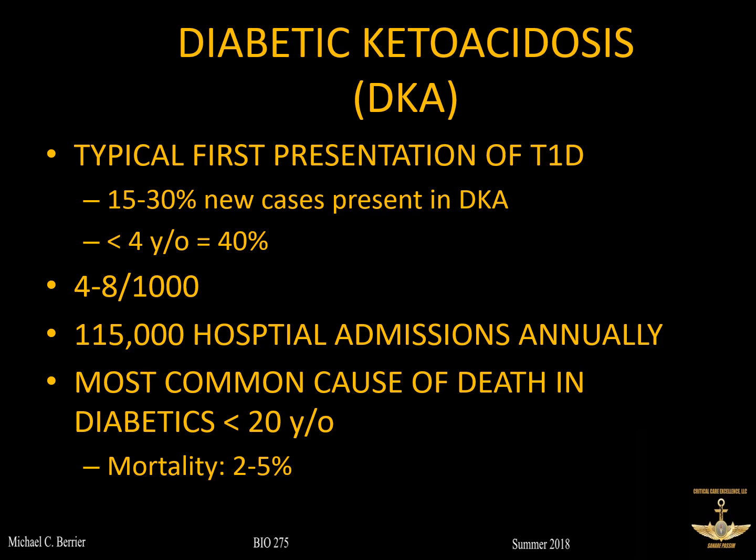The typical first presentation of type 1 diabetes is DKA — diabetic ketoacidosis — an incredibly dangerous disease. Up to 30% of new cases in the five-to-ten-year-old age range will first present in DKA. About four to eight per thousand diabetics per year develop DKA, with over 100,000 hospital admissions annually. It's the most common cause of death in diabetics under 20, with a mortality rate around 5%. The disease tends to hide in summertime because kids are active, drinking a lot, and peeing a lot — until they start vomiting and getting too fatigued to move.